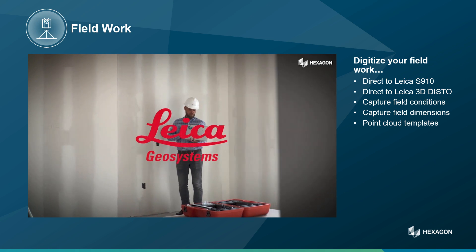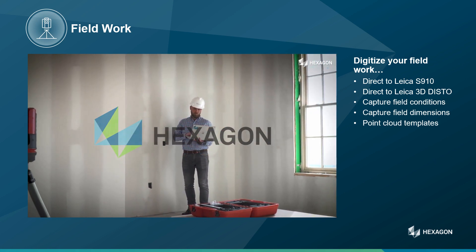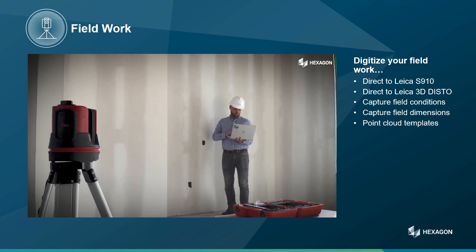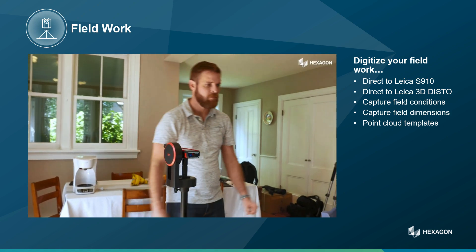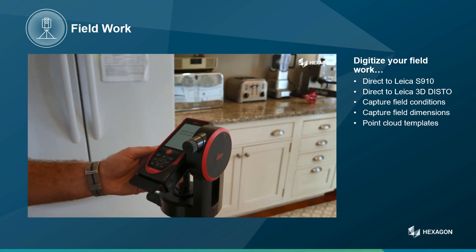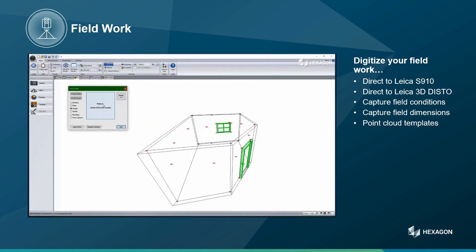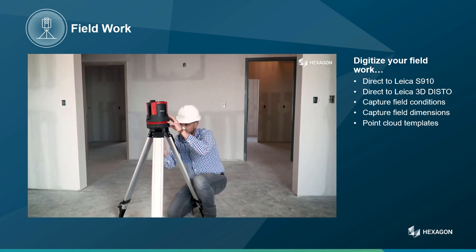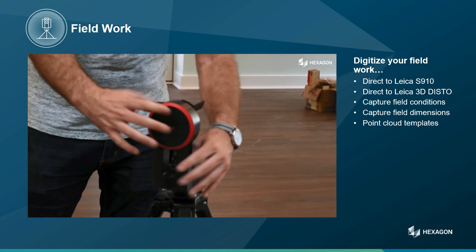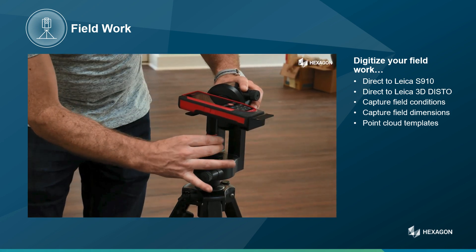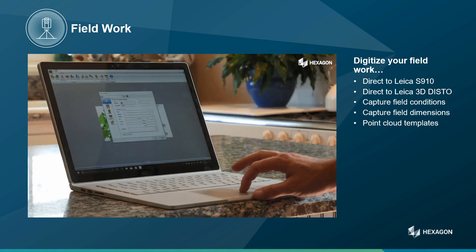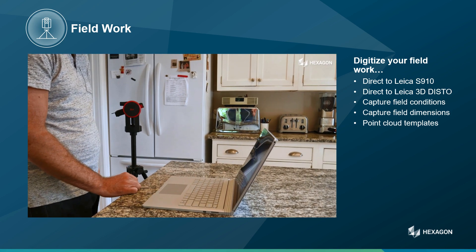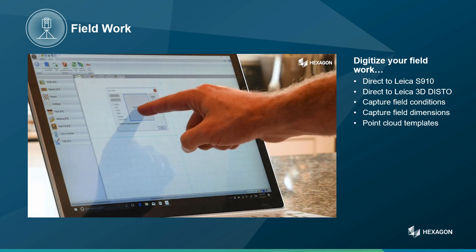It is very important to accurately capture conditions in the field back to the factory. With direct links inside CabinetVision to the Leica S910 and 3D Disto products, which are developed by Hexagon Geosystems division, we can create 3D point clouds directly in CabinetVision with unmatched accuracy. Because CabinetVision and Leica are both part of Hexagon, we have been able to work directly with the developers of the Leica Disto system to create a seamless and direct link between the products. This direct link allows you to take room measurements with the Leica Disto laser measurement device while simultaneously creating room layouts and dimensions in your jobs within CabinetVision.